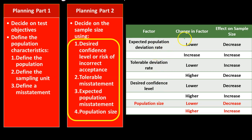For expected population misstatement: if the factor is lower, sample size decreases; if higher, sample size increases. For tolerable deviation rate it is an inverse relationship: lower factor means sample size increases, higher means it decreases. For desired confidence level: lower means decrease, higher means increase. For population size: lower means decrease, higher means increase.